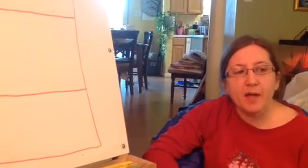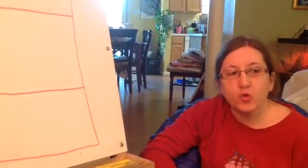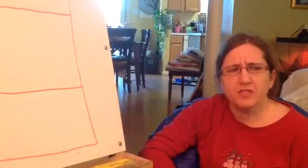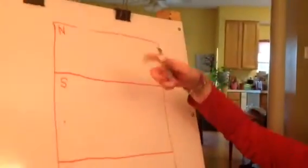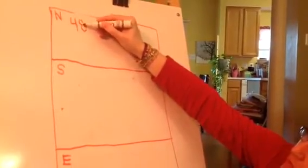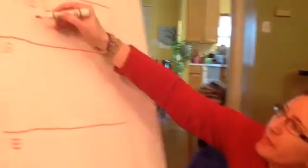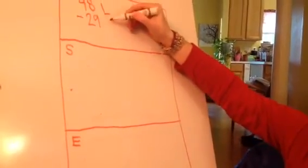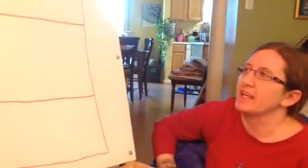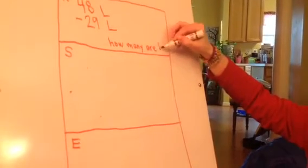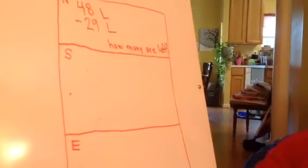All right, I'm going to give you guys a hard one. Let's say that Miss Drass had 48 Legos in a pile and then she used 29 of them to build a house. How many Legos does Miss Drass have left? Let's take notes. I'm going to write 48 L for 48 Legos. And then she used 29 of them to build a house — so they got used, they're gone. We're going to take away 29 Legos, and then I want to know how many are left. Pause the video and solve that problem.